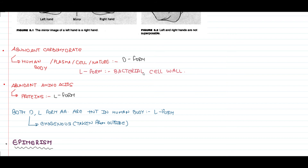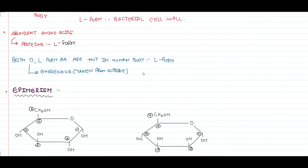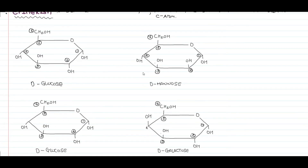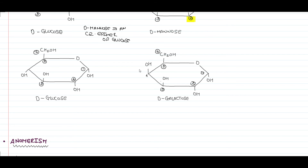The next type of isomerism is epimerism. Epimerism occurs due to a difference in the orientation of OH and H around any carbon other than the penultimate carbon. For example, D-glucose and D-mannose differ in the orientation of the OH group around the second carbon — so D-mannose is a C2 epimer of glucose. In the case of galactose, the difference is around the fourth carbon atom: the hydroxyl group in galactose is upwards whereas in glucose it is downwards — so D-galactose is a C4 epimer of glucose.